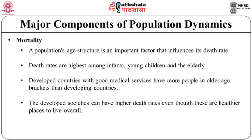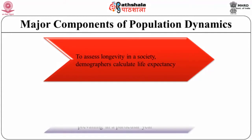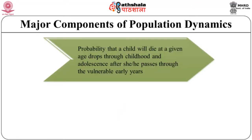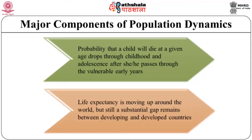Therefore, developed societies can have higher death rates even though they are healthier places to live overall. To assess longevity in a society, demographers calculate life expectancy — the age that a newborn would on average live to, assuming they were subjected to a particular set of age-specific mortality rates, usually those prevailing in a particular year. The probability that a child will die at a given age drops through childhood and adolescence after passing through the vulnerable early years. Life expectancy is moving up around the world, but a substantial gap remains between developing and developed countries.